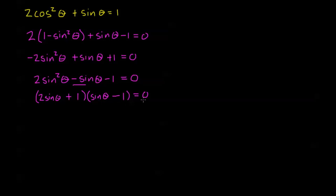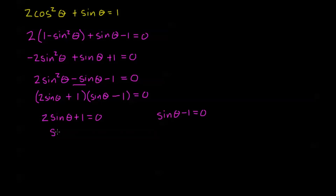We have a product on the left and 0 on the right. This product is only equal to 0 when one of the factors is equal to 0, so we split into two problems: when is 2 sine theta plus 1 equal to 0, and when is sine theta minus 1 equal to 0. For the first, subtracting 1 and dividing by 2, we get sine theta equals negative one half.